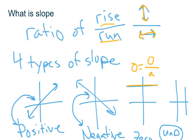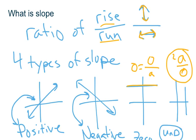For undefined, again using the ratio of rise over run — how far is it rising? Some variable amount. But how far is it running, going left or right? It's not moving left or right at all. Try typing that into a calculator with a equal to two — your calculator is going to say error, can't divide by zero. You're not allowed to divide by zero, and that's what's happening here. That's why we call it an undefined slope.